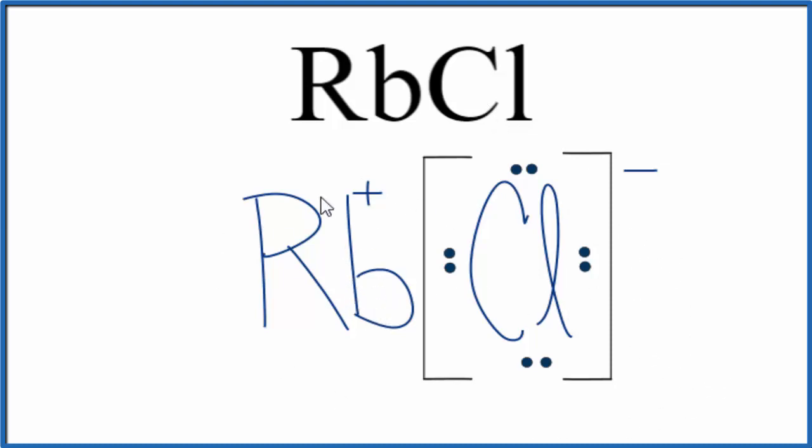Still, this Lewis structure is useful. It shows the rubidium, the metal that transferred an electron to the nonmetal, giving us the Lewis structure for RbCl.